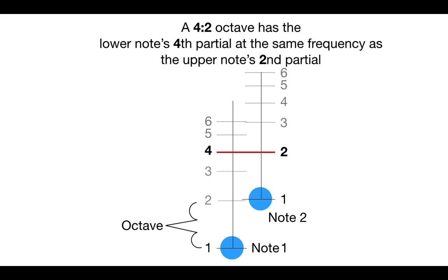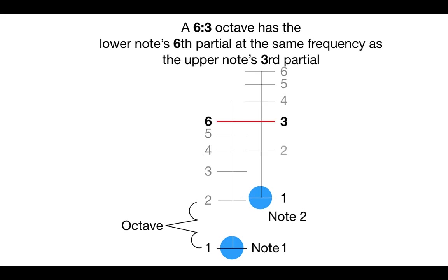A 4-2 octave has the lower note's fourth partial at the same frequency as the upper note's second partial. And a 6-3 octave has the lower note's sixth partial at the same frequency as the upper note's third partial.